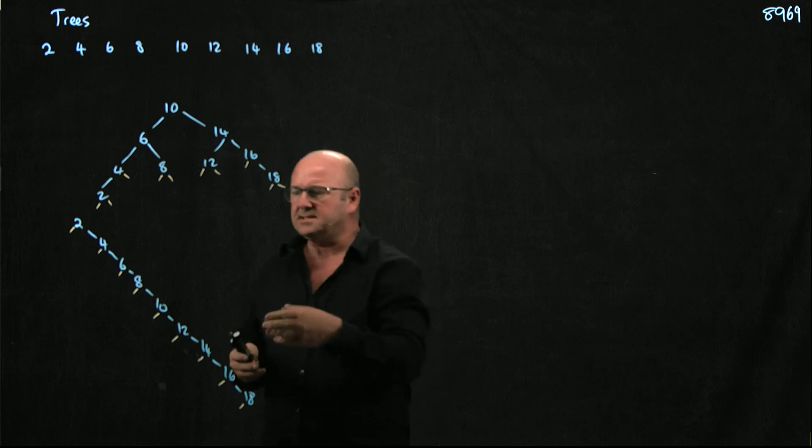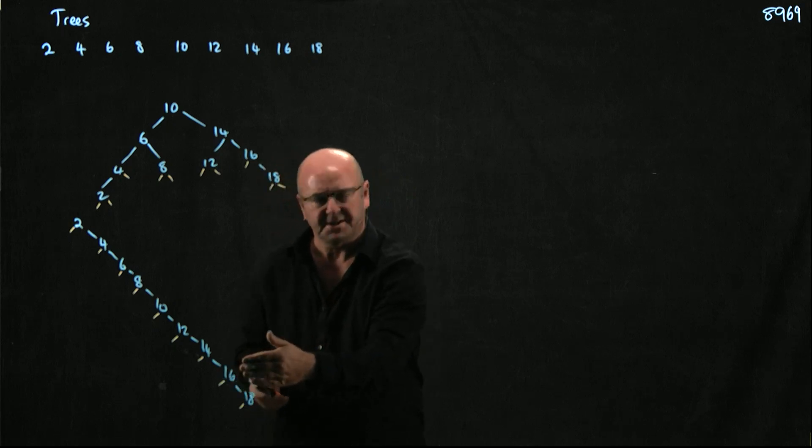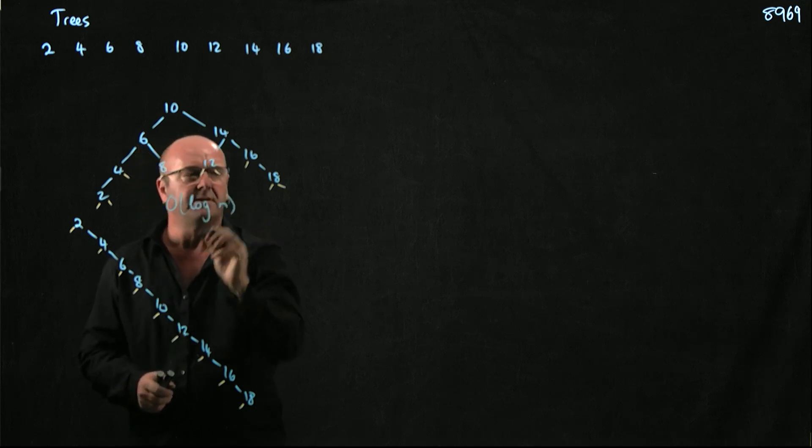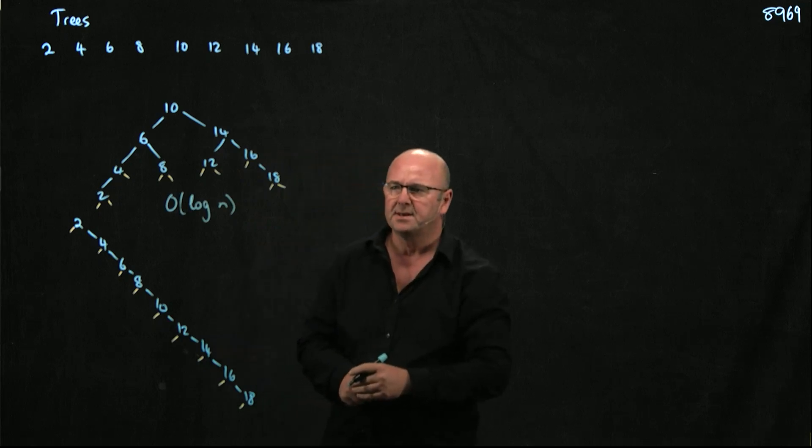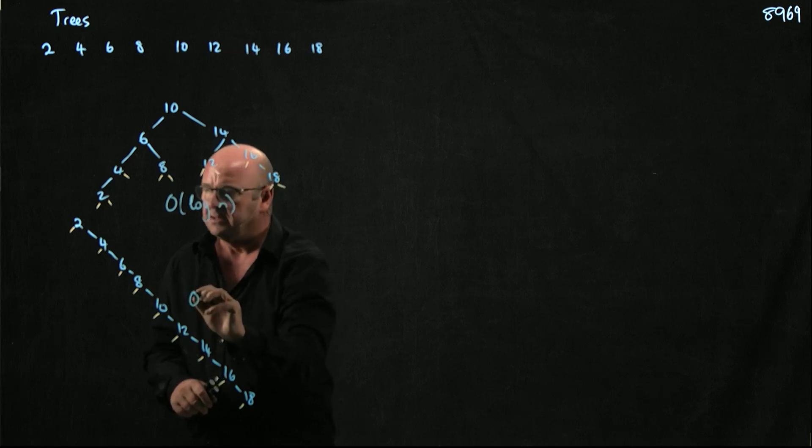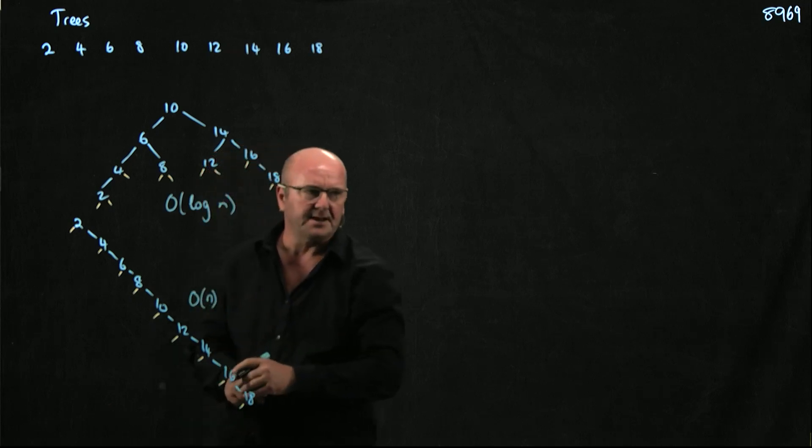The difference is, well what's the complexity of searching for this? This one, if we search through it, has complexity of big O of log n to find things. What's the complexity of searching through this? It's big O of n. That's right, it's a crappy linked list, right?